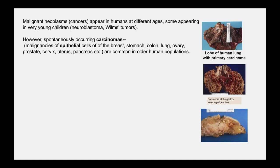Spontaneously occurring carcinomas — malignancies of epithelial cells of the breast, stomach, colon, lung, ovary, prostate, cervix, uterus, pancreas, etc. — are common in older human populations. Pathology gross pictures here show a lobe of lung with a primary cancer, an ulcerative carcinoma at the junction of the esophagus and stomach, and a breast carcinoma showing the typical invasive features seen in cancer.